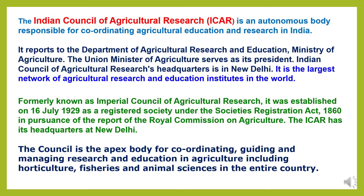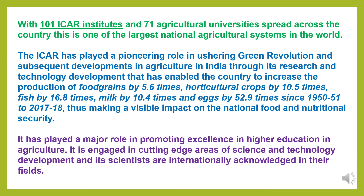ICAR is the largest network of agricultural research and education institutes in the world. Formerly known as the Imperial Council of Agricultural Research, it was established on 16th July 1929 as a registered society under the Societies Registration Act 1860, in pursuance of the report of the Royal Commission on Agriculture. The Council is the apex body for coordinating, guiding, and managing research and education in agriculture, including horticulture, fisheries, and animal sciences. With 101 ICAR institutes and 71 agricultural universities spread across the country, it is one of the largest national agricultural systems in the world.